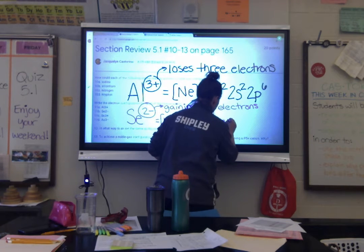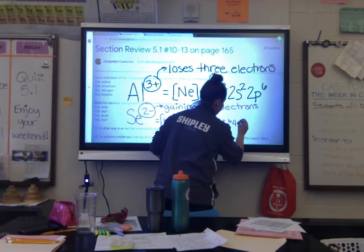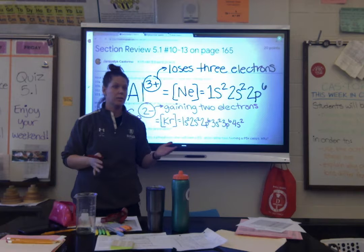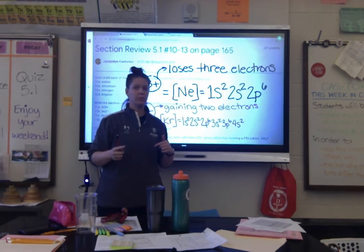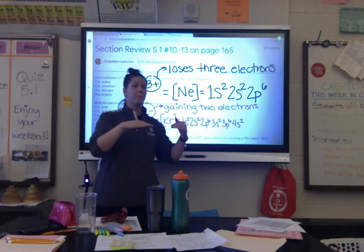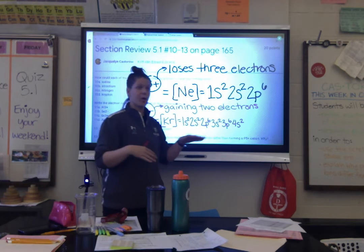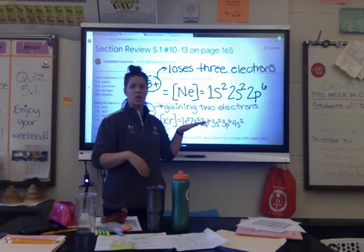Number 13, the last question: to achieve noble gas configuration, a phosphorus atom will form P³⁻ rather than P⁵⁺ — they want to know why. Logical squirrel: phosphorus has 5 valence electrons. If the squirrel goes out five steps, it could go three more steps to reach eight, or go back five steps to reach zero.